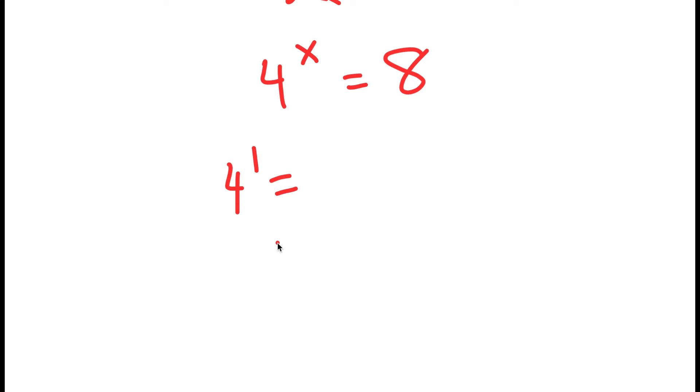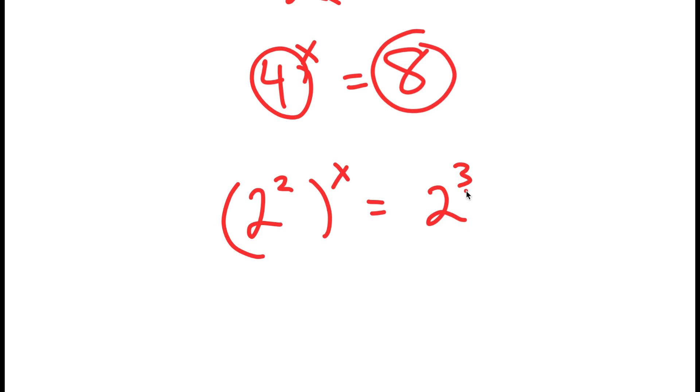Now, how are we going to find the exact value of x? Well, we can do this in two ways. The easier method is to rewrite 4 as 2 squared and to rewrite 8 as 2 to the power of 3. So we basically rewrote these two numbers so that they have the same base.